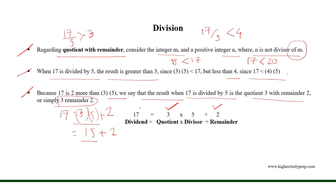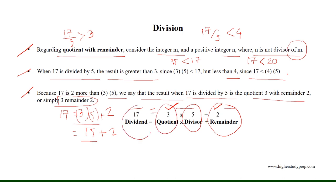Therefore, 17 equals 3 times 5 plus 2, where 2 is the remainder, 5 is the divisor, 3 is the quotient, and 17 is the dividend.